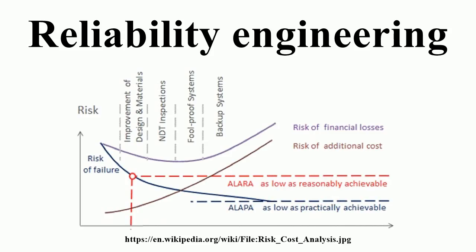Reliability may be defined in several ways: the idea that an item is fit for a purpose with respect to time; the capacity of a designed, produced, or maintained item to perform as required over time; the capacity of a population of such items to perform as required over a specified time; the resistance to failure of an item over time; and the probability of an item to perform a required function under stated conditions for a specified period of time, as well as the durability of an object.